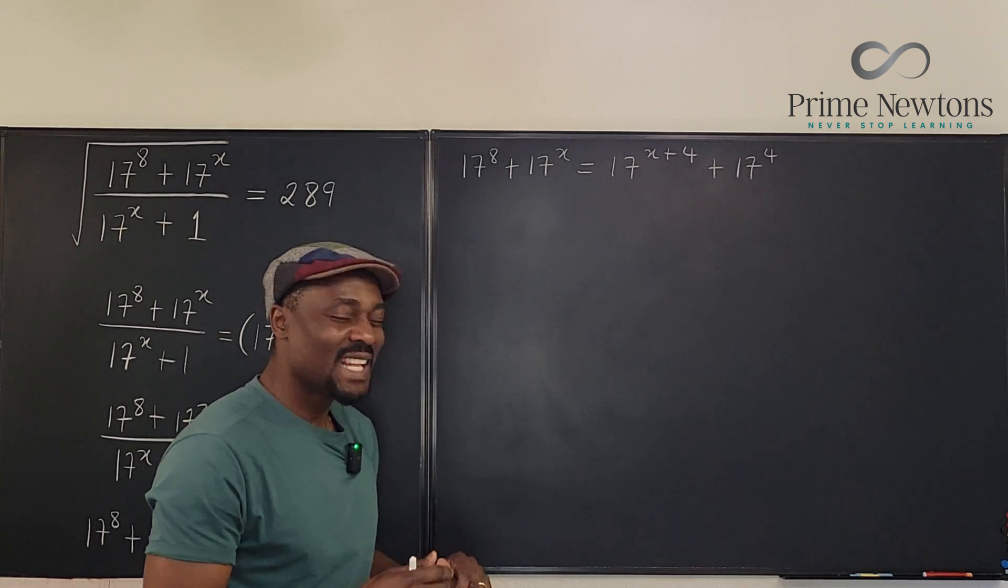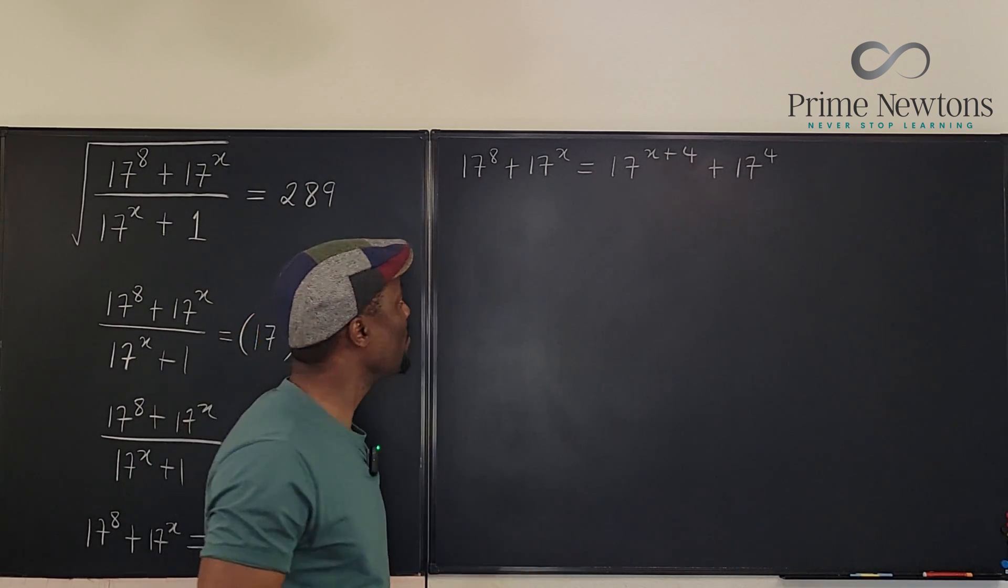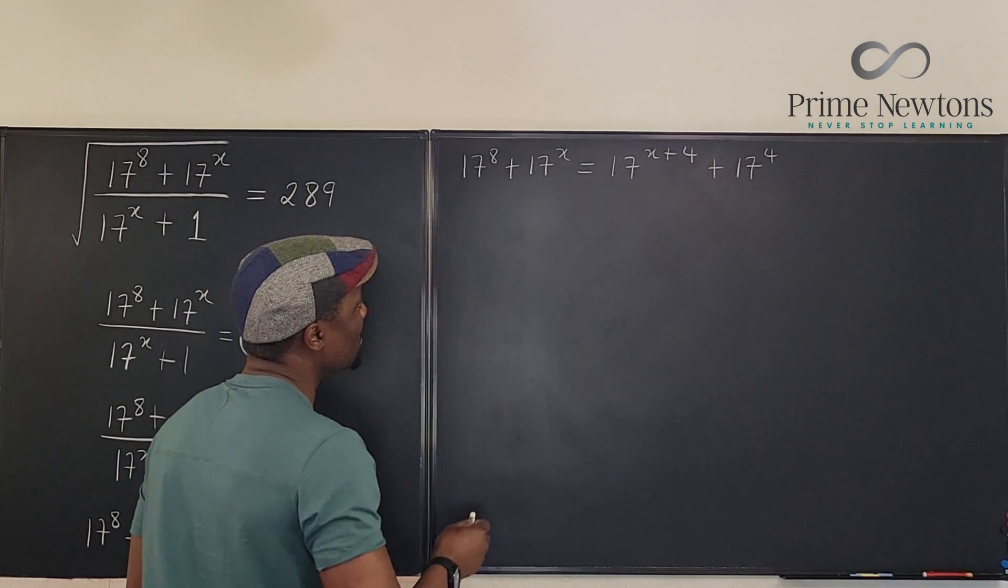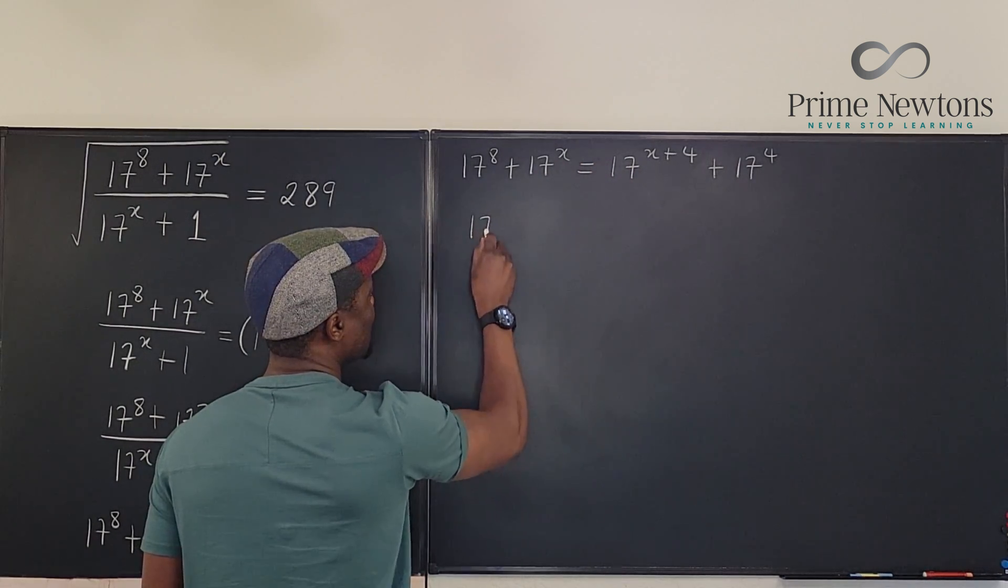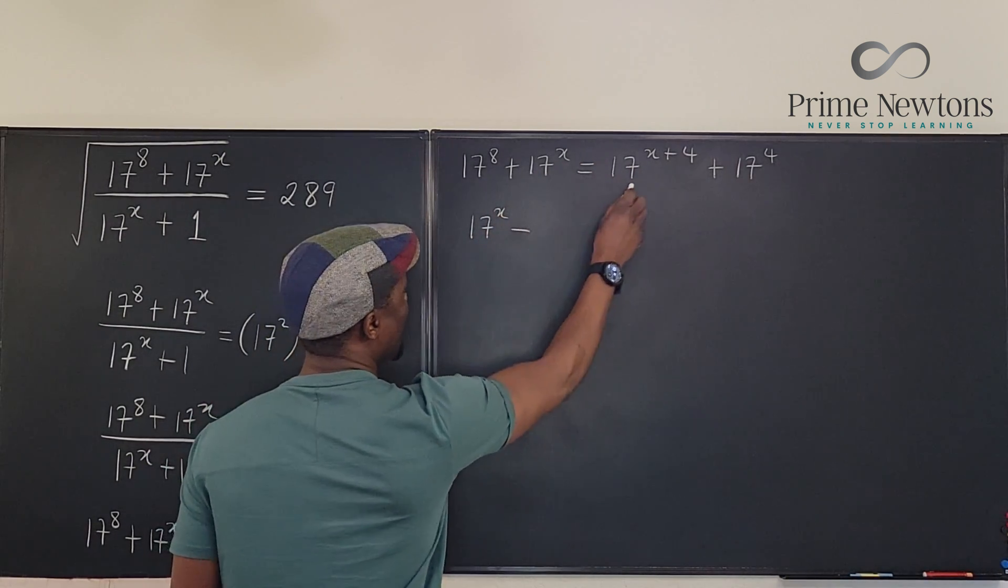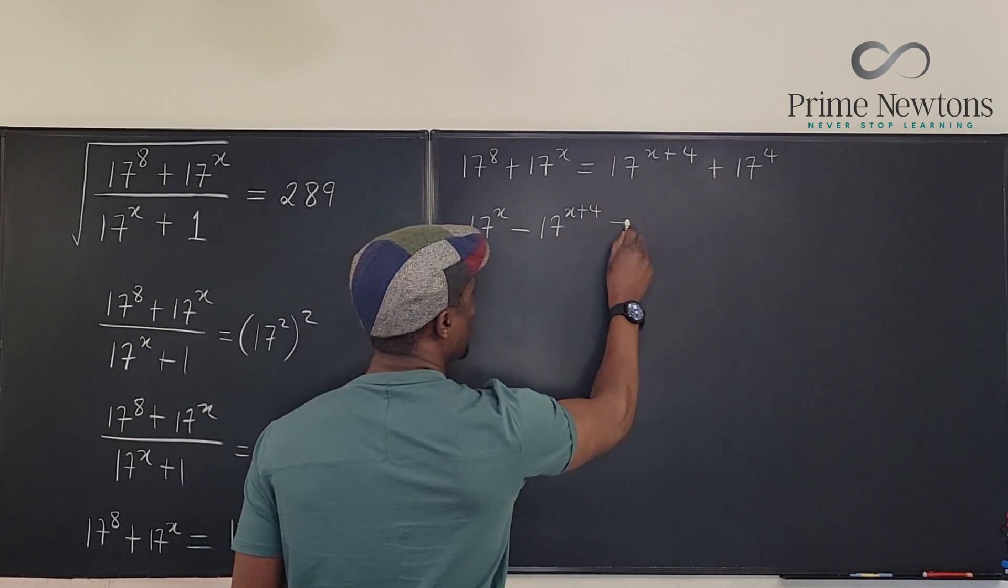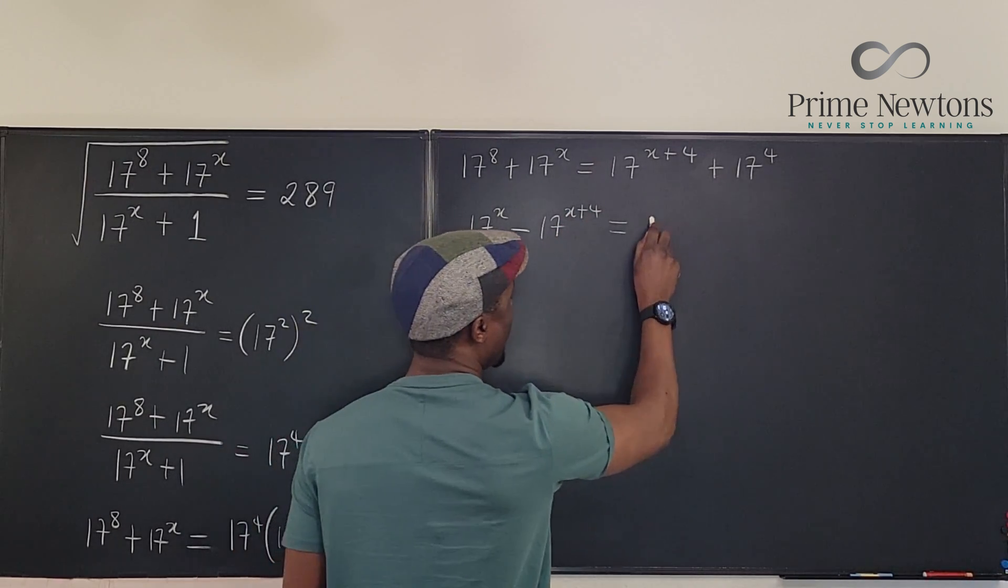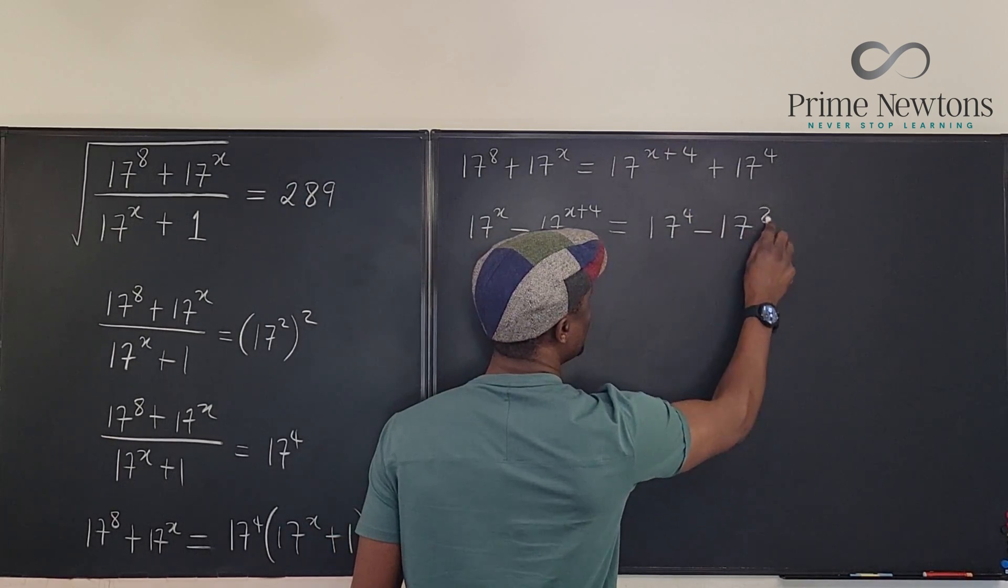So what do you do? Let's do something. Let's try and pull all the X's to one side and see what it turns out to be. So what I'm going to do is I'm going to take this, bring it here. So I have 17 to the X minus 17 to the X plus 4. And on the right hand side, I have 17 to the 4th minus 17 to the 8th.